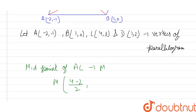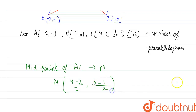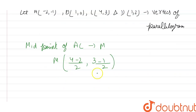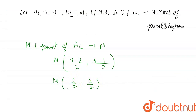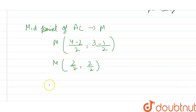For the y-coordinate, it will be 3 plus (-1), that is (3 + (-1)) divided by 2. This gives us (-1 + 3)/2 = 2/2. And the x-coordinate is also 2/2. So M coordinate values are (1, 1).